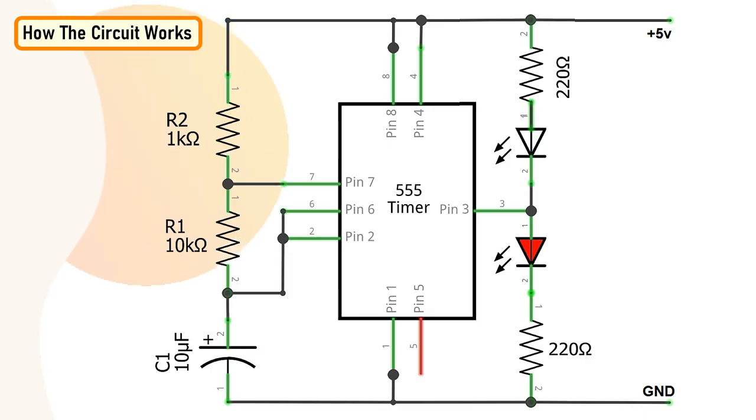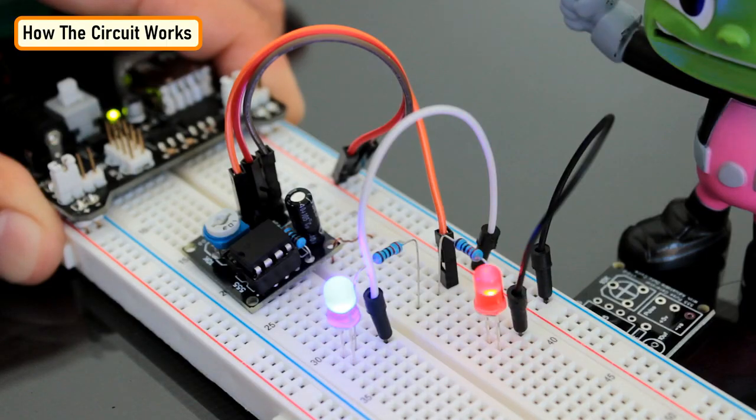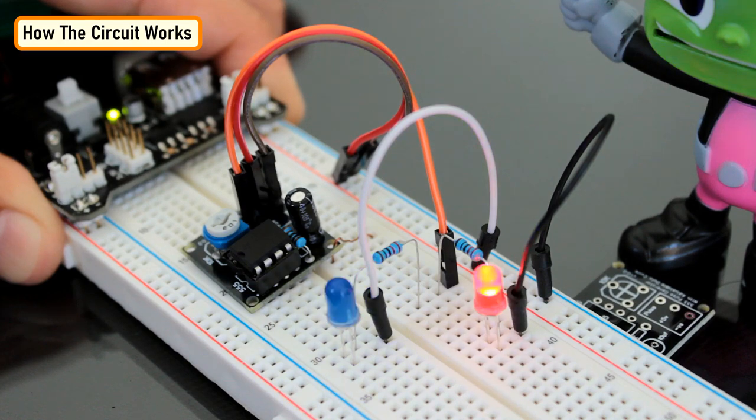Now, to get the dual LED flashing effect, you need to connect a second LED with opposite polarity to pin number 3 of the IC. That's it. Easy as that.